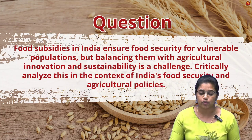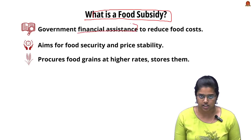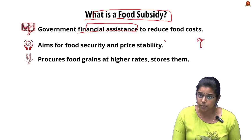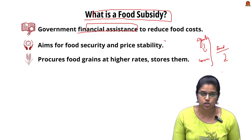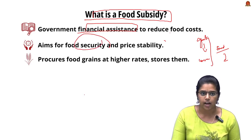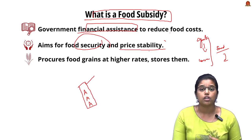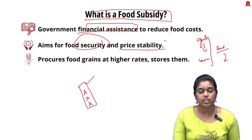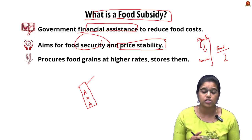Food subsidies are financial assistance provided by the government to consumers in India, making food affordable at a subsidized rate for the vulnerable sections of society. This reduces the cost of food efficiently. The main aim is to ensure food security — the 3 A's: accessible, affordable, and availability of food grains — and to ensure price stability so food remains available at a subsidized rate even during market fluctuations.